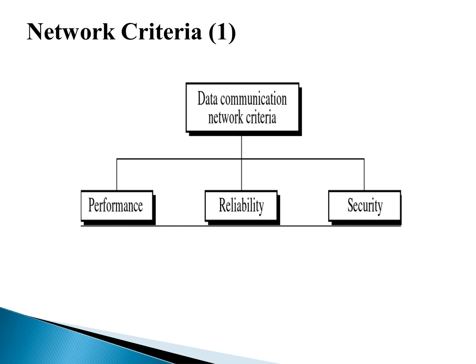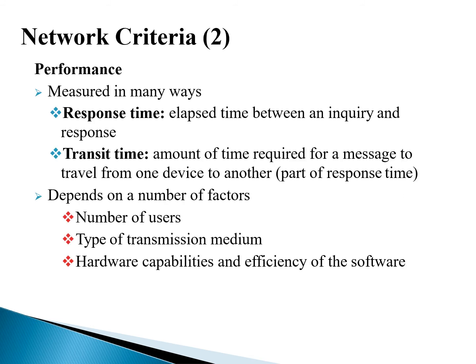The next very important topic is network criteria in data communication. A network depends on a number of factors to ensure data communication is up to mark. There are three important criteria to judge a network: performance, reliability, and security. To have true communication occur over a network, we must understand these criteria. The first criterion is performance — the more load, the more performance degrades.